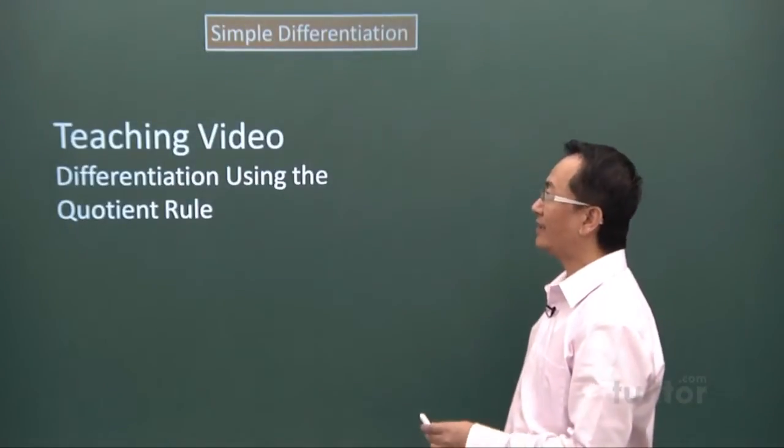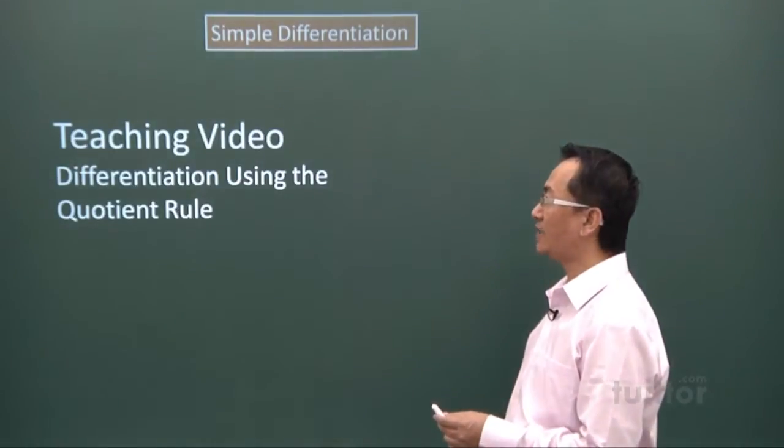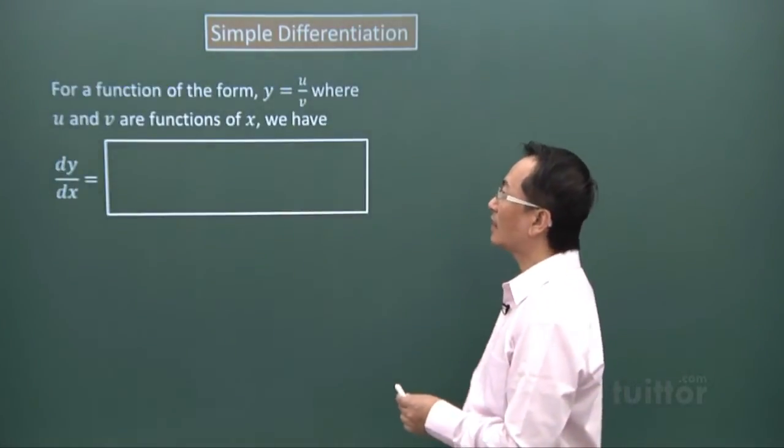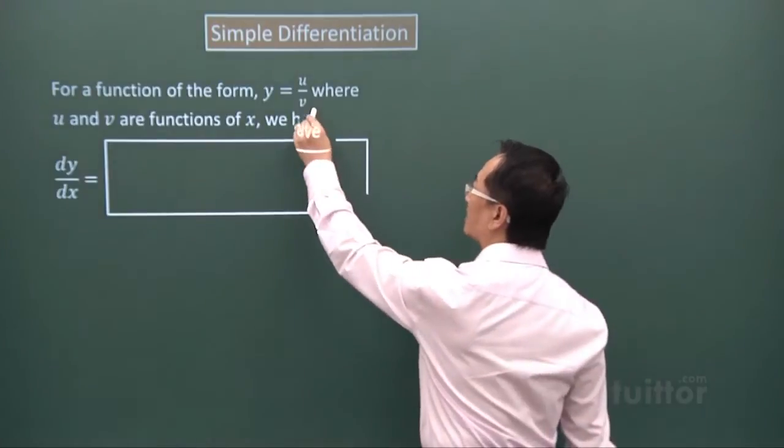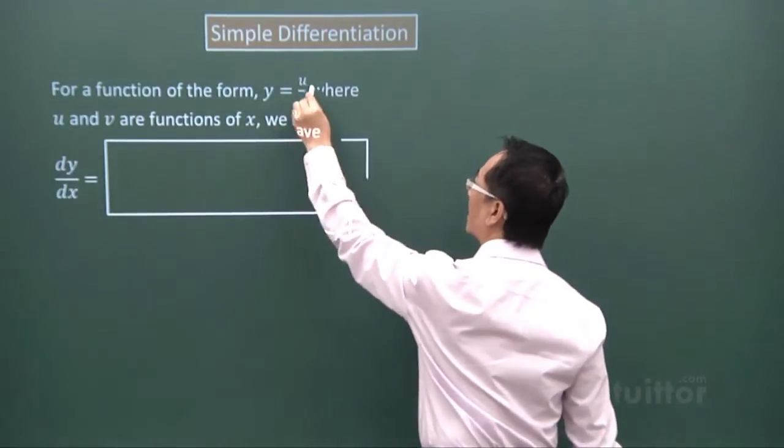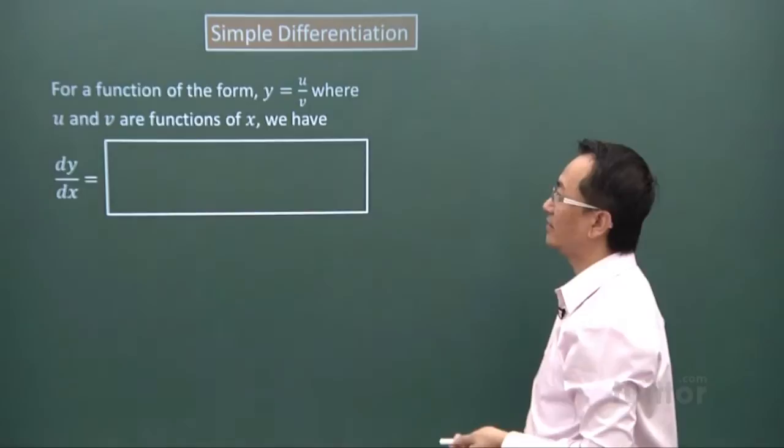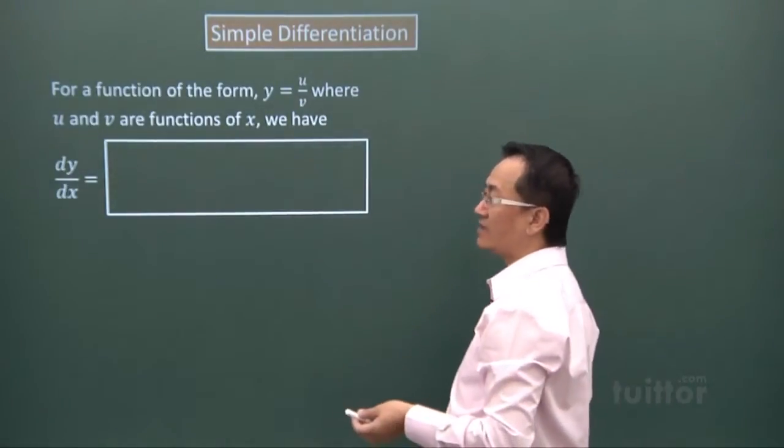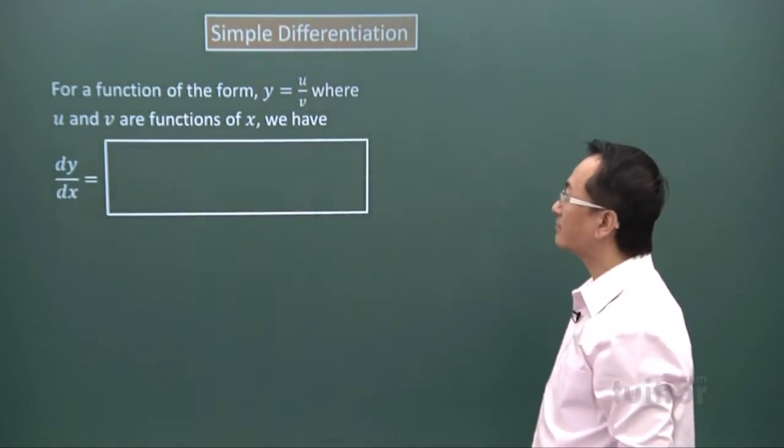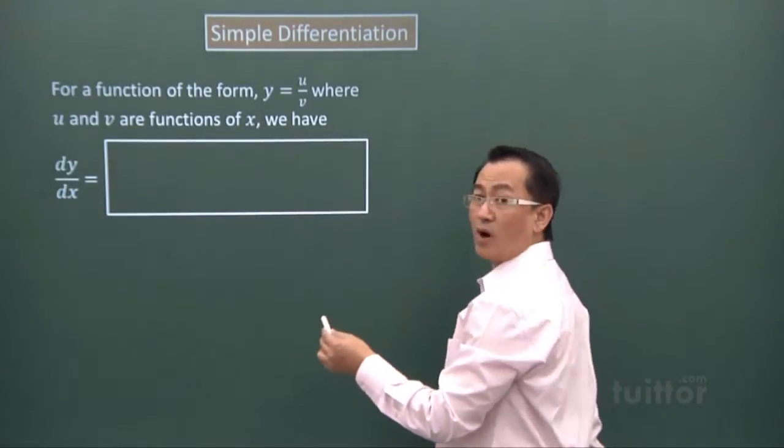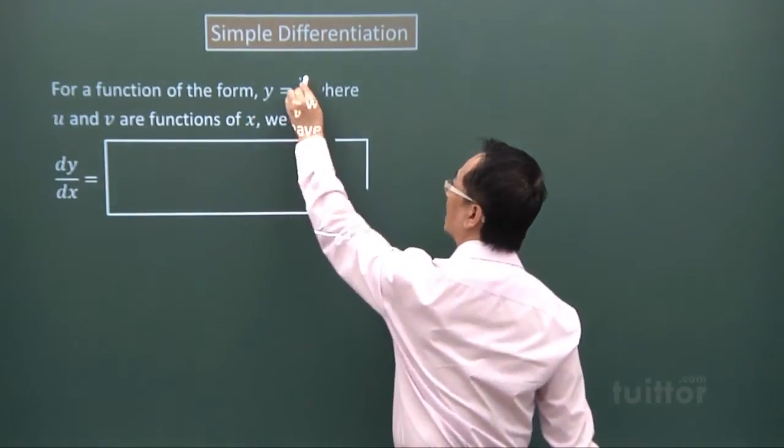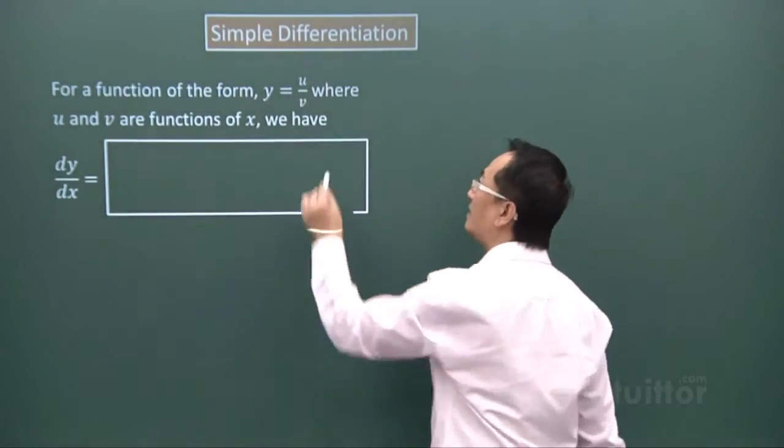We are looking at differentiation using the quotient rule. When you get a function like y equals u over v, that expression is a quotient u over v. Notice that u and v are functions of x, so when we write dy over dx, we are referring to differentiating this equation with the expression u over v.